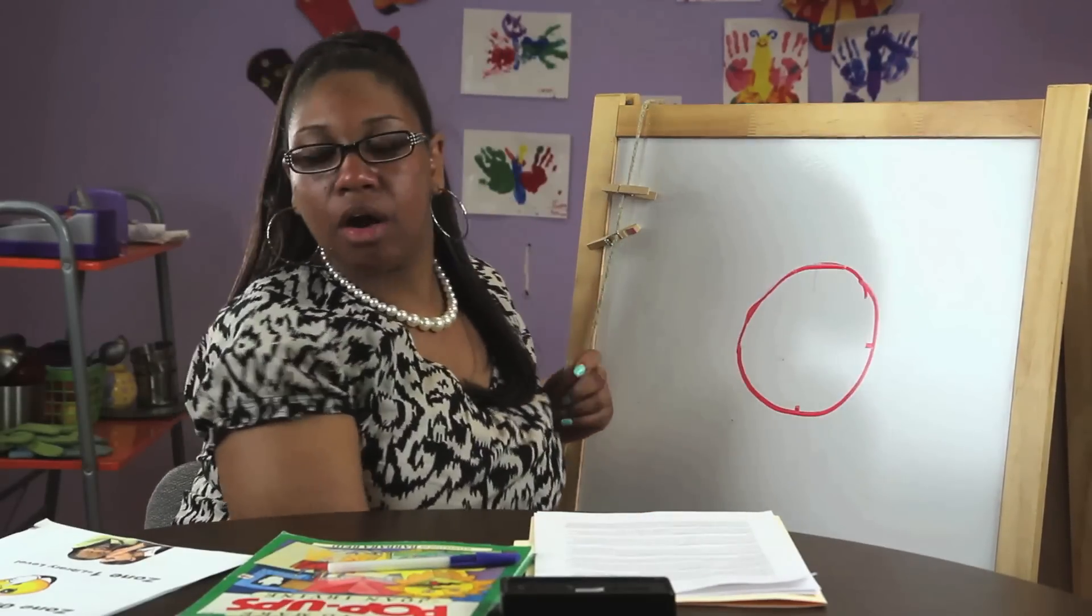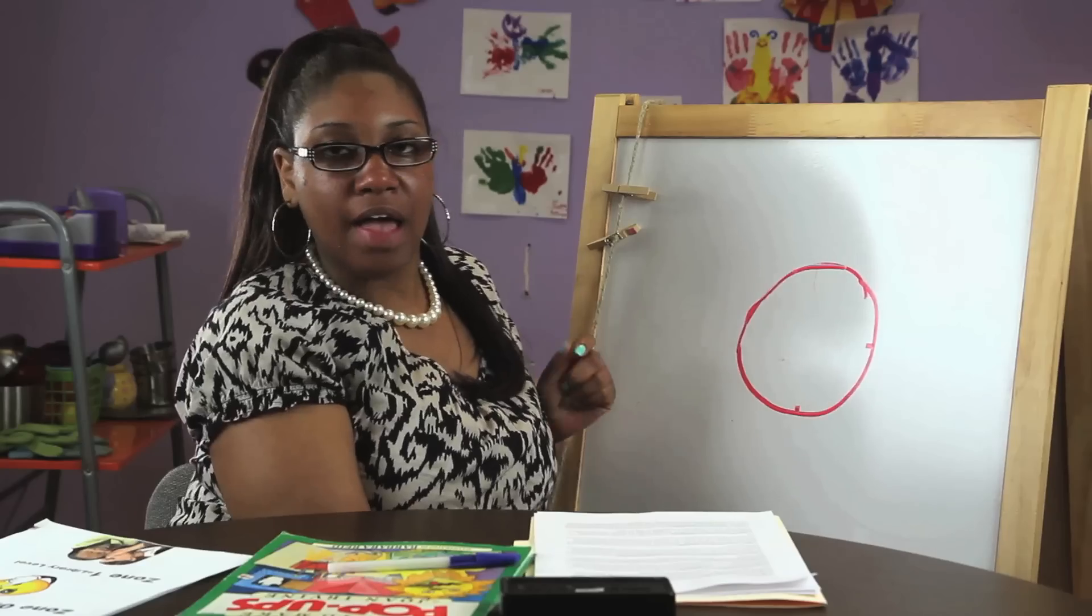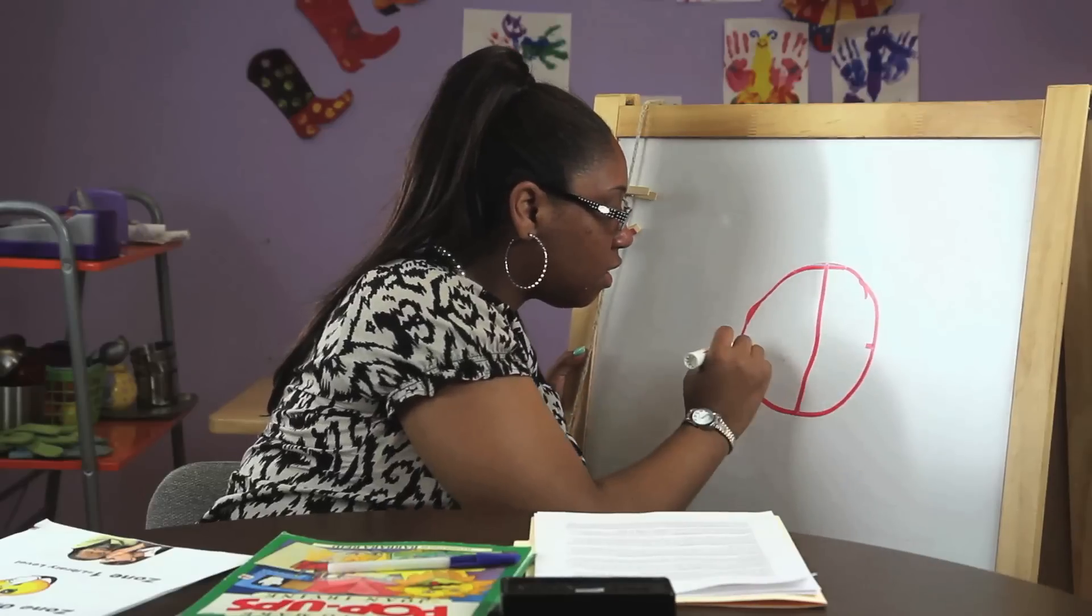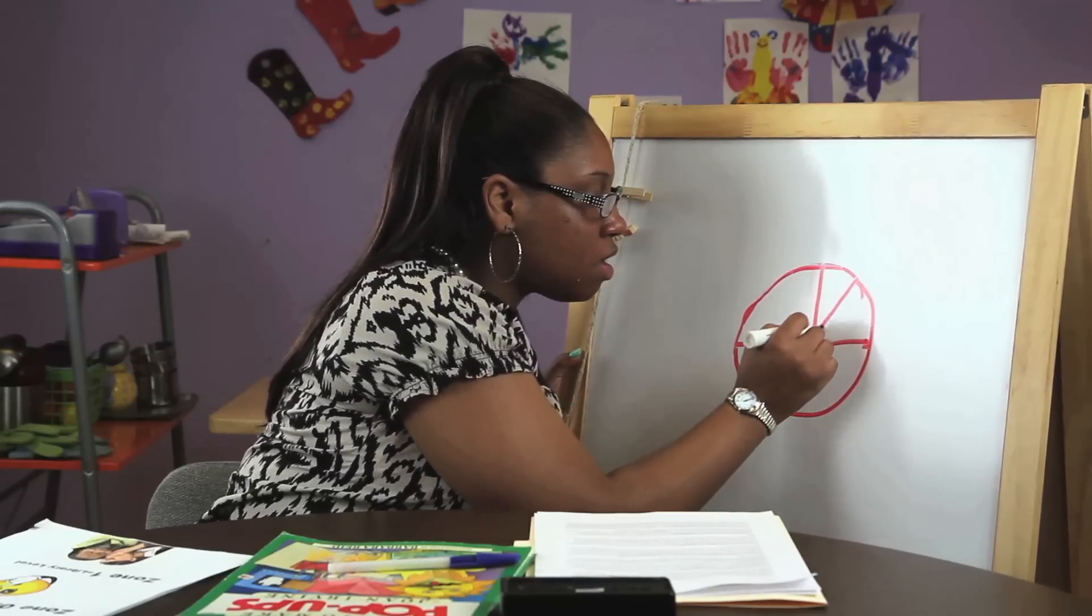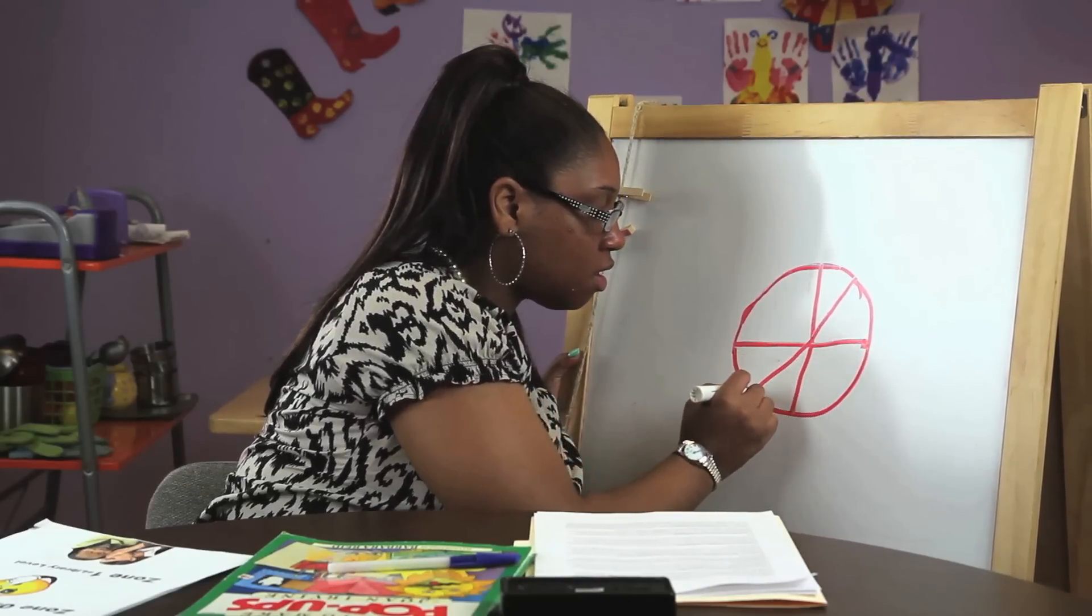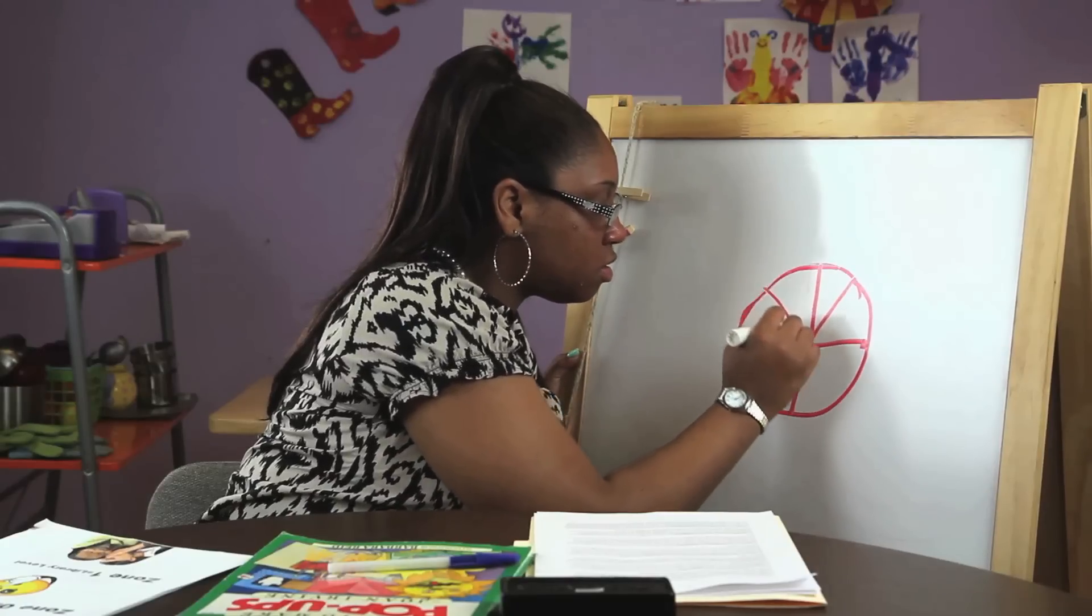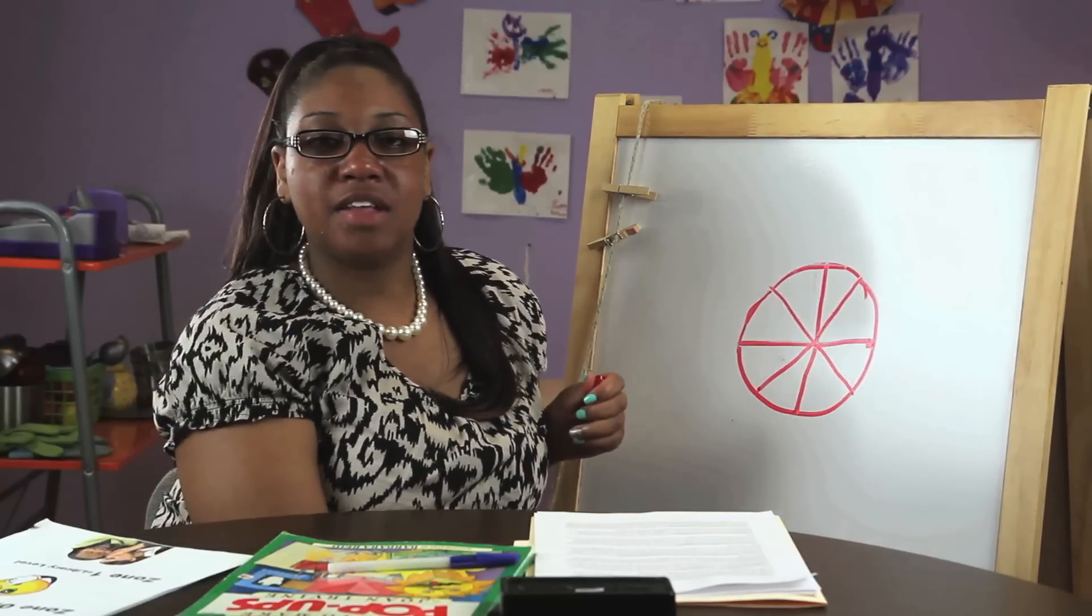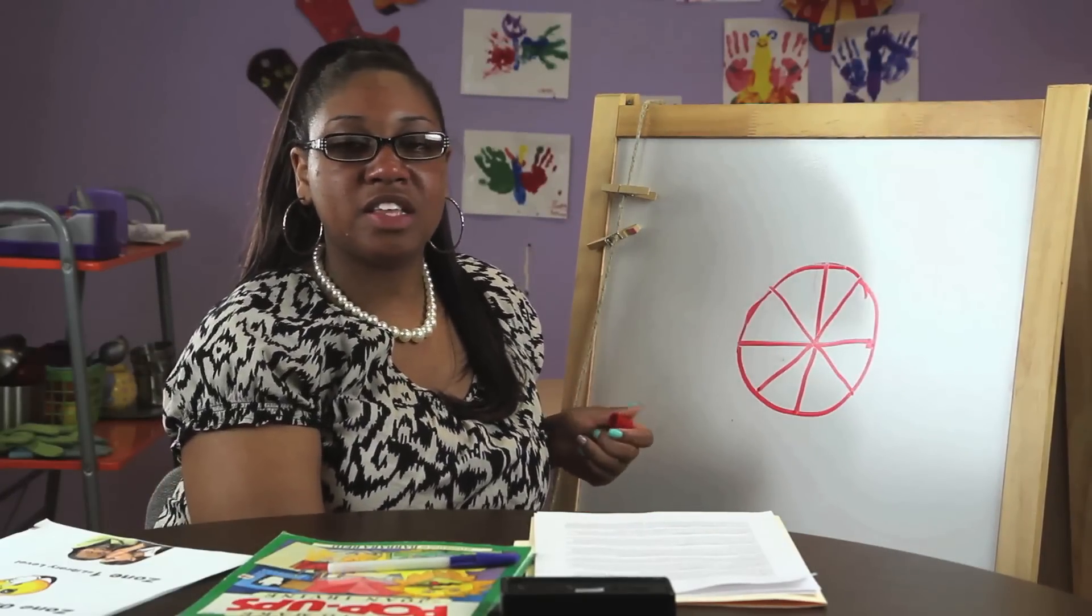Play around with your pie on the board and let them cut it up to as many pieces as they like. For kindergartens, I will always keep it even amount of numbers so that they can get the concept of equal slices of pie.